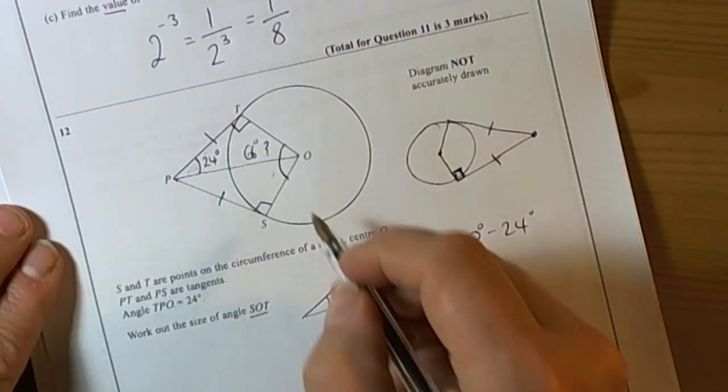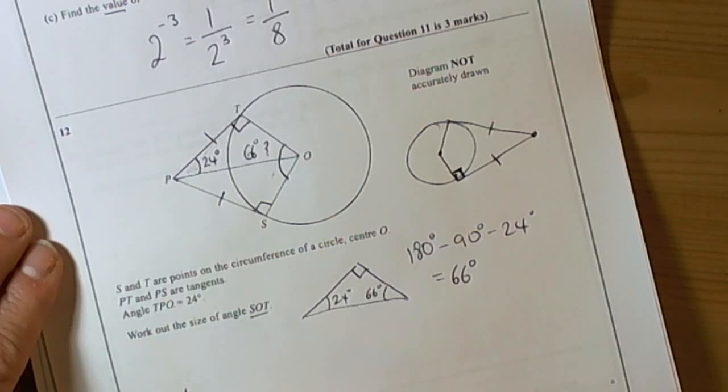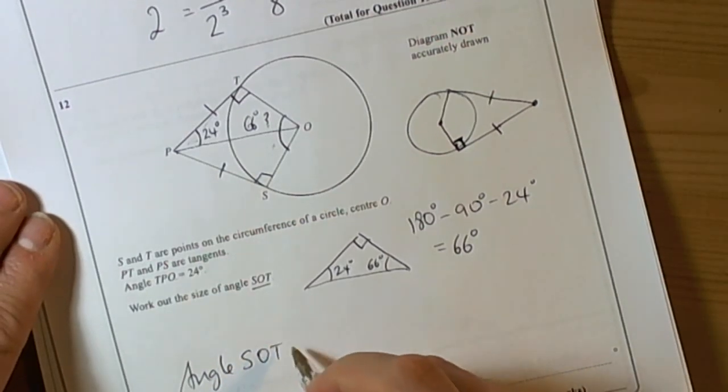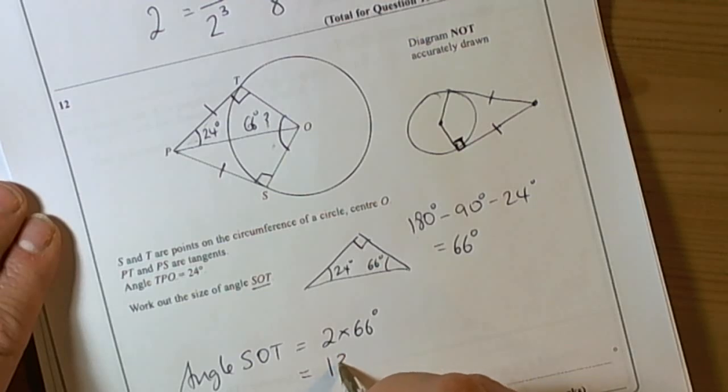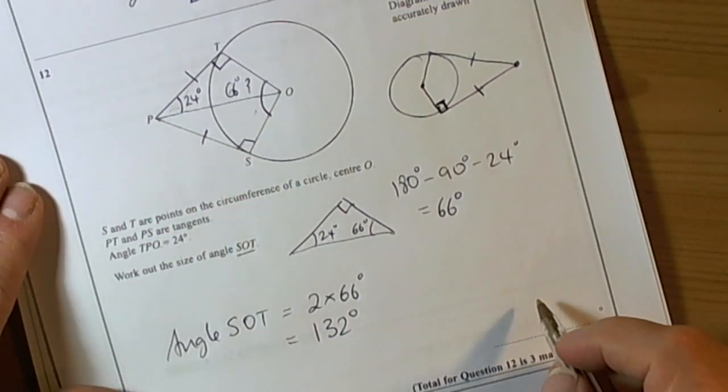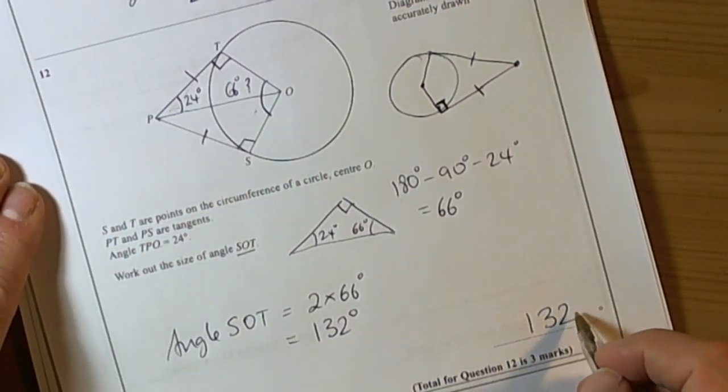So therefore angle SOT is equal to... two times 60 is 120, two times 6 is 12, add those together 132 degrees. So the answer for the question is 132 degrees.